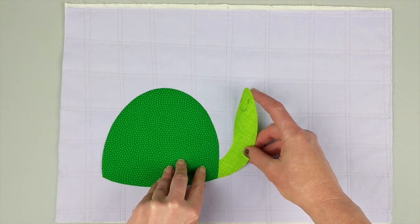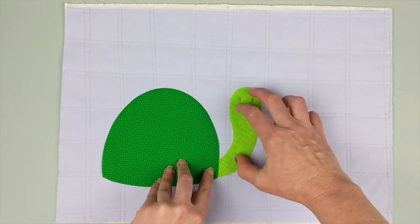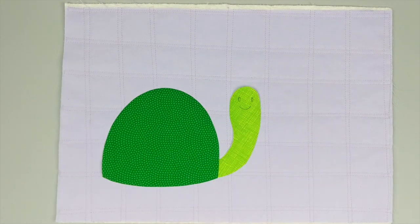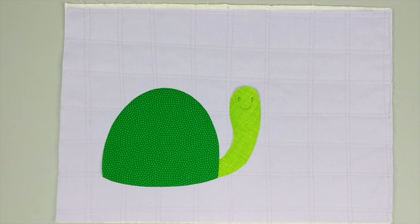Once you take the paper off, that guide is gone. That tucks right underneath the shell in the front, and you want to have about a quarter of an inch overlap. It doesn't have to be exact, but roughly a quarter of an inch.